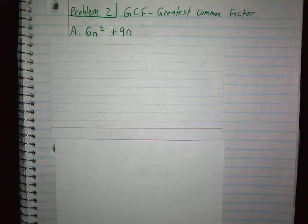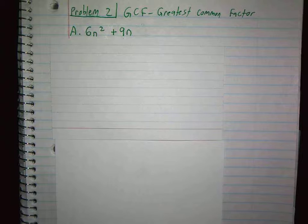So the next skill is finding the greatest common factor. So what is different about 6N squared plus 9N than what we did before? There is no C term, right? So it's a binomial, not a trinomial.